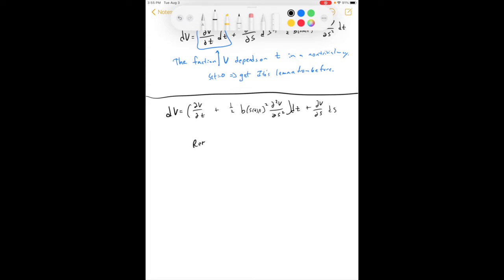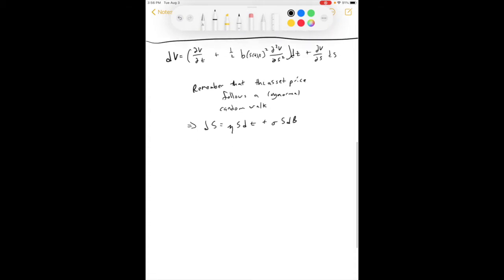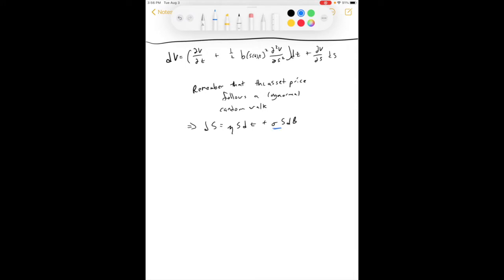Now, let's remember that the asset price follows a log normal random walk. Otherwise, we can say ds equals mu s dt plus sigma s db, okay? So, we can take this bit here and plug it in right there. We can get dv is equal to the partial of v with respect to t, plus one-half sigma squared, s squared, second derivative with respect to s, close the parentheses, dt, plus partial with respect to s, ds.